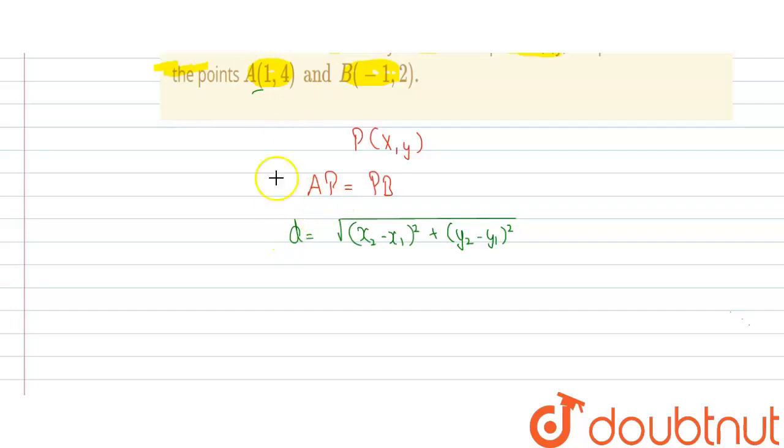So distance AP will be under root of x minus 1 whole square plus y minus 4 whole square.